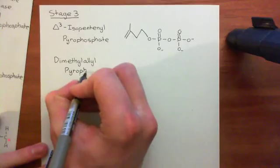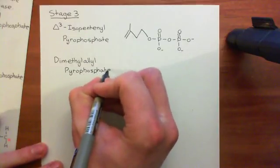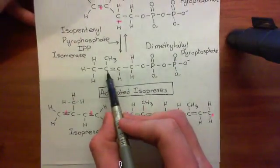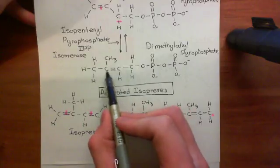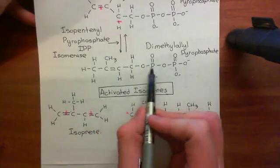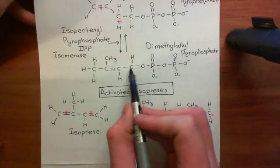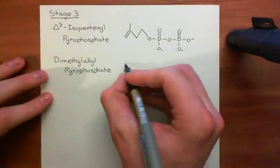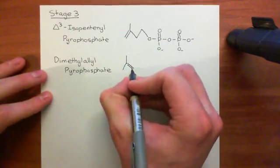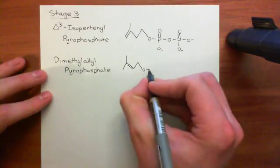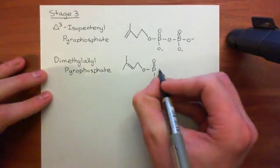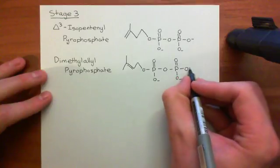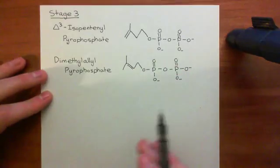Joining these will start to resemble a cholesterol molecule if we draw it in the right way. In dimethyl-allyl pyrophosphate, the double bond is between the second and third carbons — you usually view the carbon off which the pyrophosphate comes as the first carbon, so this would be the second and this one the third. The structure has a double bond here, then another group there, then the pyrophosphate coming off. It's a very similar structure to delta-3-isopentenyl pyrophosphate — they are structural isomers of each other, and the enzyme isopentenyl pyrophosphate isomerase takes you between the two forms.